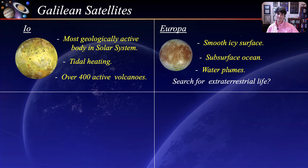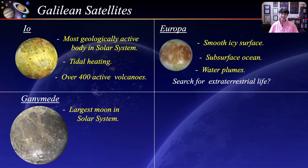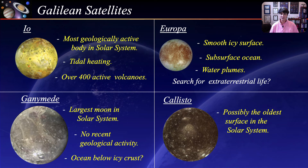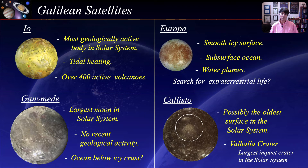Ganymede is the largest moon in the solar system — actually larger than Mercury — and recent data from the Hubble Space Telescope suggests there may be an ocean of water under its icy crust. Callisto is the last of the Galilean satellites and is possibly the oldest surface in the solar system, with impact basins dating back 4 billion years. The Valhalla crater is the largest multi-ring impact crater in the solar system, with an inner bright region about 220 miles across and concentric rings extending to about 1,200 miles.